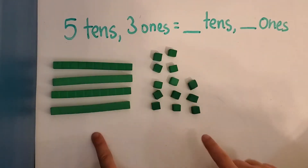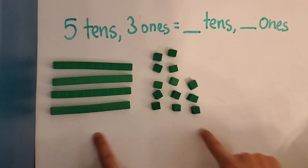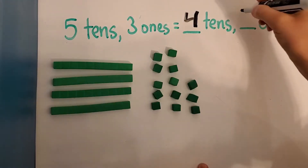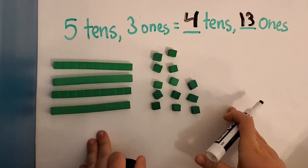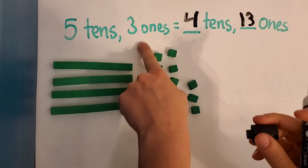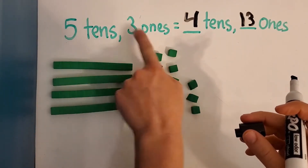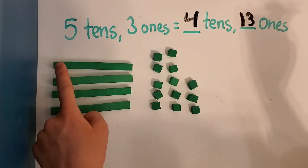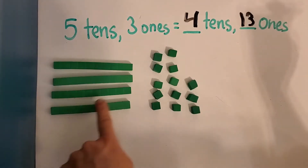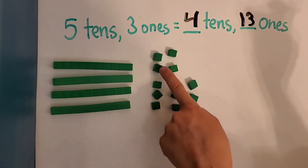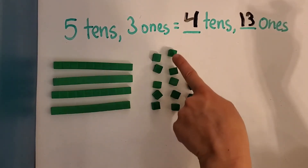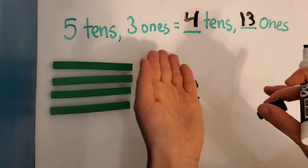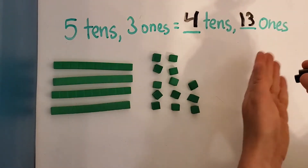So we saw that five tens and three ones is equal to four tens and thirteen ones. We can check — five tens, three ones equals what number? Fifty-three, right? And four tens and thirteen ones: four tens gets us to forty — ten, twenty, thirty, forty — then forty-one, forty-two, forty-three, forty-four, forty-five, forty-six, forty-seven, forty-eight, forty-nine, fifty, fifty-one, fifty-two, fifty-three. So it also gives us fifty-three. Five tens and three ones is equal to four tens and thirteen ones.